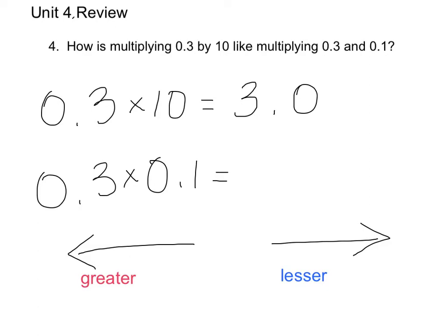Now, with 0.3 times 0.1, well 0.1 is 10 times less, not 10 times greater the way 10 was. 0.1, 10 times less than, and in this case it's 10 times less than 0.3. Well, any time we go 10 times, we're moving a place value. In this case, 10 times less means we're moving one place value to the right.